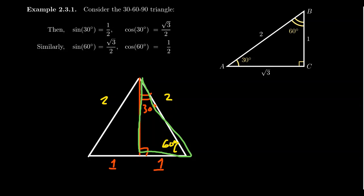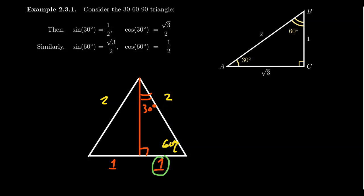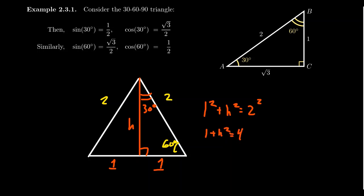So you have a 30-60-90 triangle. The short side opposite the 30-degree angle is one, because the original side length of the equilateral triangle is two and that becomes the hypotenuse. So we have a triangle with a leg equal to one and a hypotenuse equal to two. Calling the other unknown side h, we get 1² + h² = 2² by the Pythagorean theorem, giving 1 + h² = 4, so h² = 3, and therefore h equals the square root of three. This gives us the standard 30-60-90 picture.